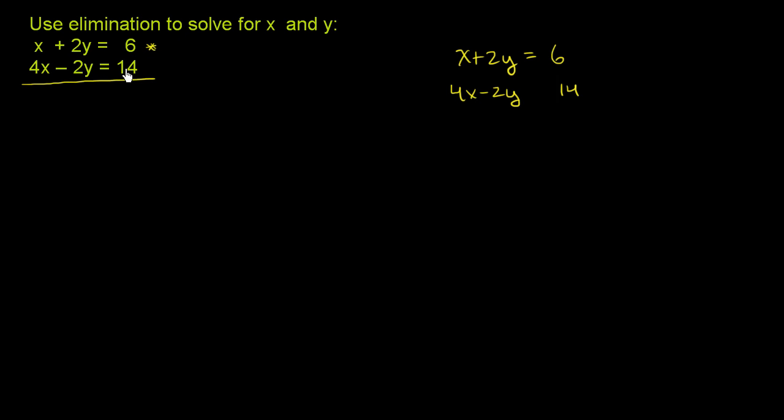You could view it as we're starting with this equation, and then we're adding the same thing to both sides. On the right-hand side, it looks like we're adding 14 to the 6. On the left-hand side, it looks like we're adding 4x minus 2y to whatever's on the left-hand side. But the second constraint tells us that 14 and 4x minus 2y are the same thing. So we're adding the same thing to both sides. So with that said, let's just do it.